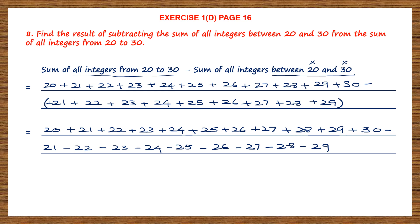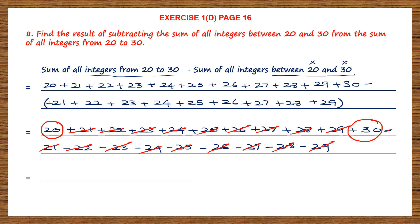Now we simplify further. Plus 21 and minus 21 cancel out because plus 21 minus 21 is 0. Similarly, plus 22 minus 22, plus 23 minus 23, plus 24 minus 24, plus 25 minus 25, plus 26 minus 26, plus 27 minus 27, plus 28 minus 28, and plus 29 minus 29 all cancel. What is left is 20 plus 30, which equals 50.